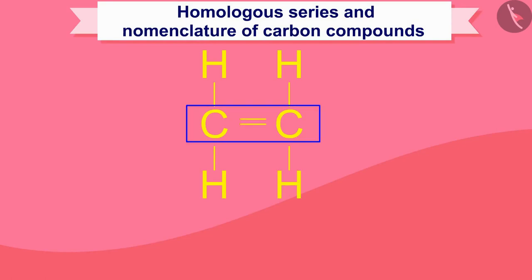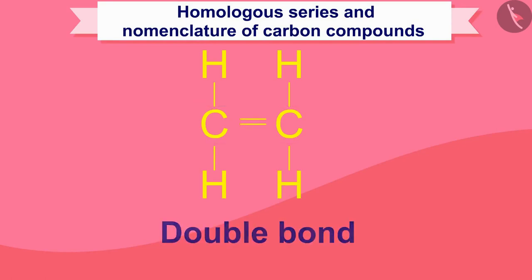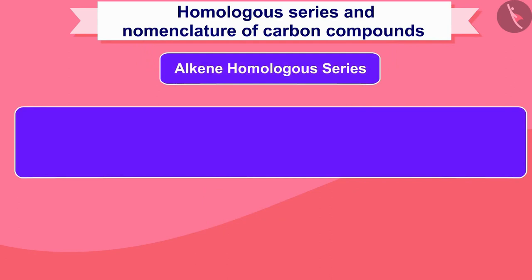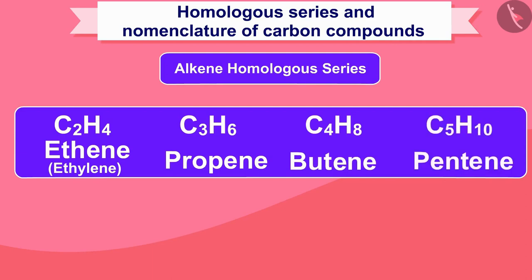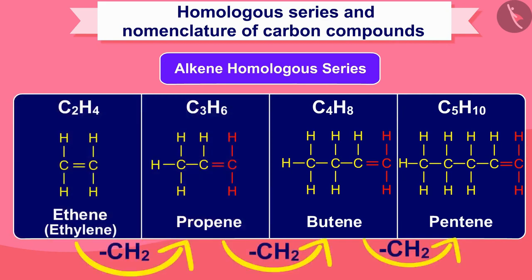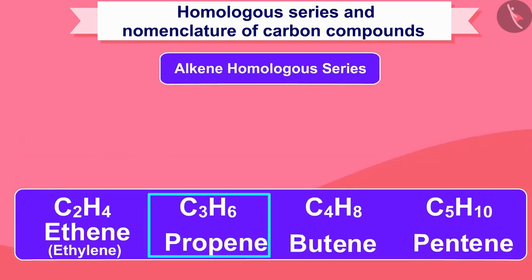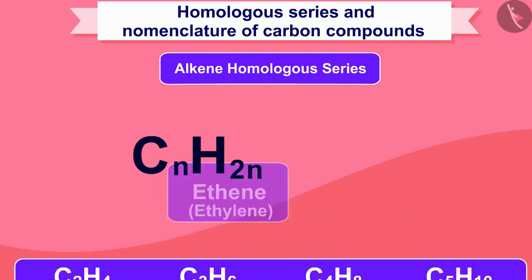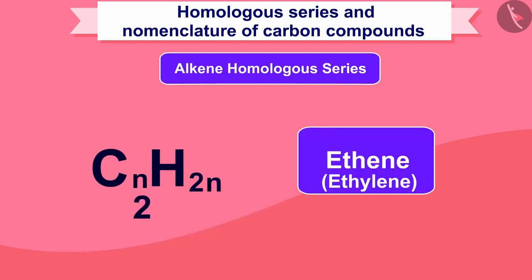If the hydrocarbon compound contains a carbon-carbon double bond, then that category will be called alkene — that is, 'ene' will be added at the end of the name. For example, ethylene, propene, butene, pentene etc. In this series too, there is a difference of CH2 unit in moving from one unit to another. We can show any compound of this category by the formula CnH2n. For example, in the second compound, ethene, N will be 2. If we write 2 instead of N in this formula, we will find the molecular formula C2H4 of ethene.